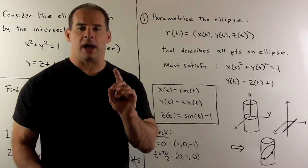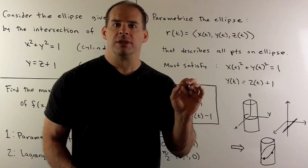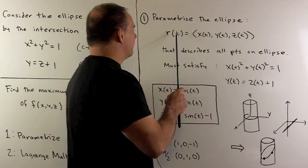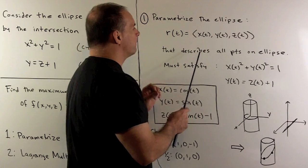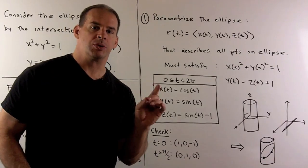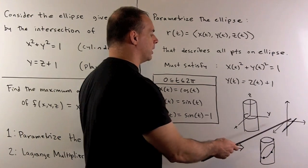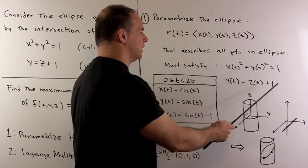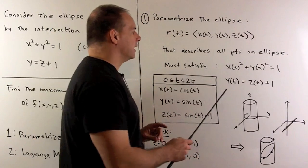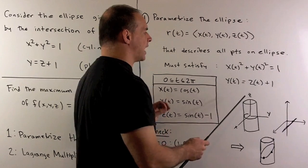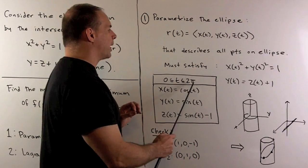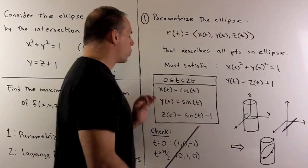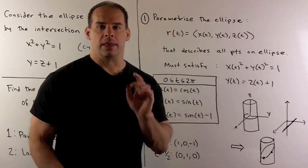The ellipse is a one-dimensional object, so I want to describe it with one variable. I'm going to set up a vector-valued function in the variable t, and we're going to try to hit every point on the ellipse using functions for each coordinate. Points on our ellipse satisfy x(t) squared plus y(t) squared equals 1, and y(t) equals z(t) plus 1. So I can let x(t) equal cosine of t, y(t) equal sine of t, with t going from 0 to 2π. Then z(t) equals y(t) minus 1, or sine of t minus 1. That's our parametrization.